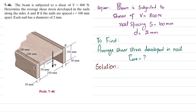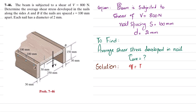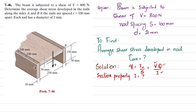Let's start with the solution. We know that shear flow is equal to horizontal shear force per unit length, which is the spacing. Shear flow is also equal to VQ divided by I. We have V, but we do not have Q or I, so we will first find I as a section property.